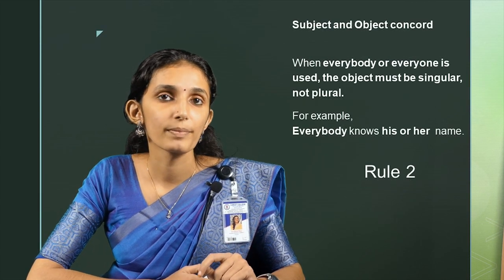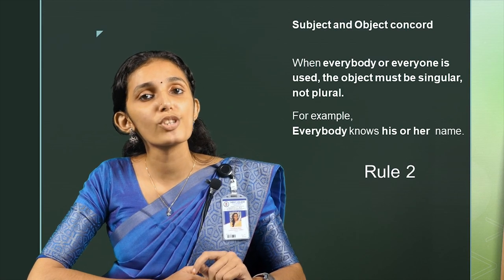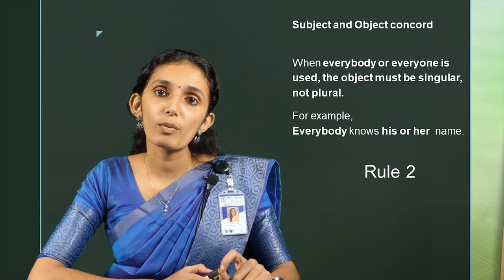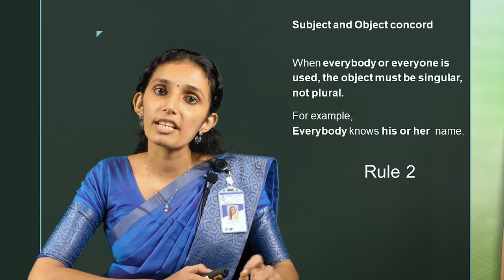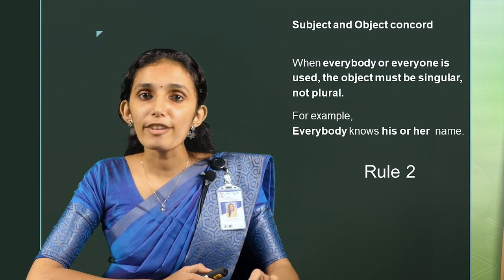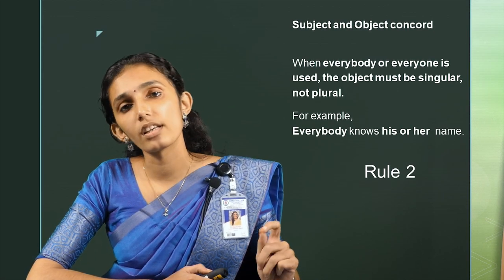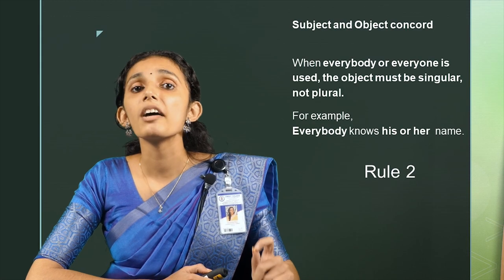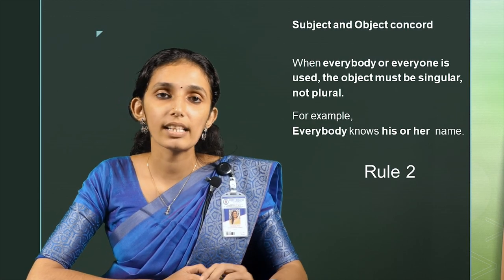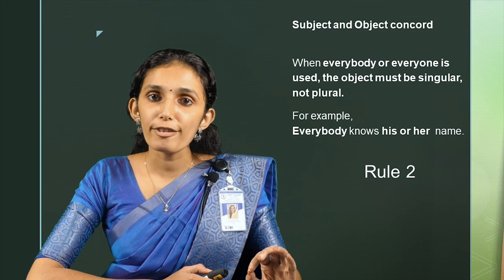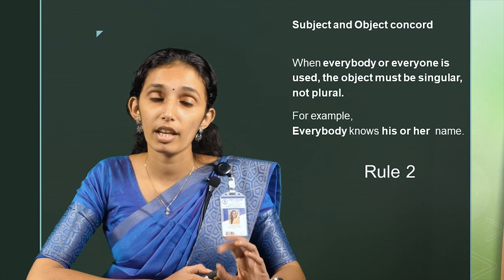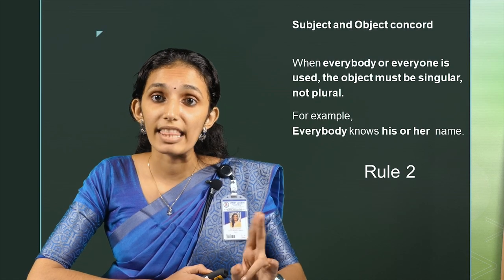Rule number 2: Subject and object concord. When 'everybody' or 'everyone' is used, the object must be singular and not plural. For example, 'Everybody knows his or her name,' and not 'Everybody knows their name.'